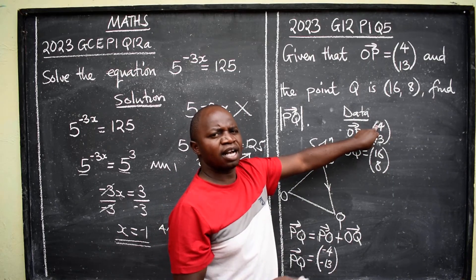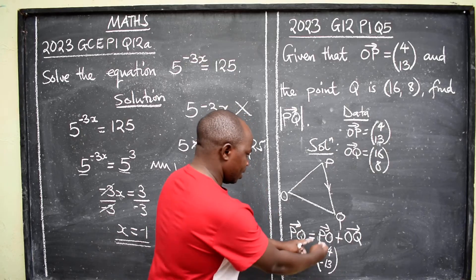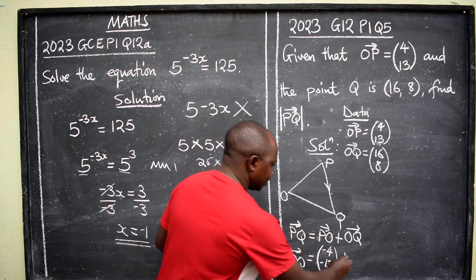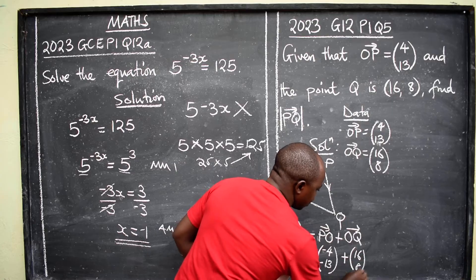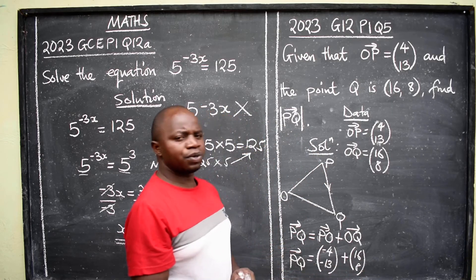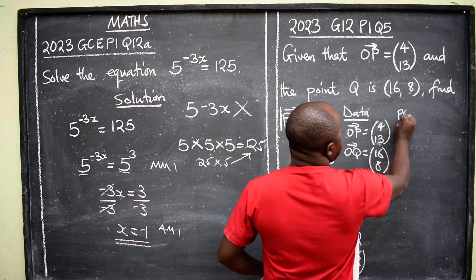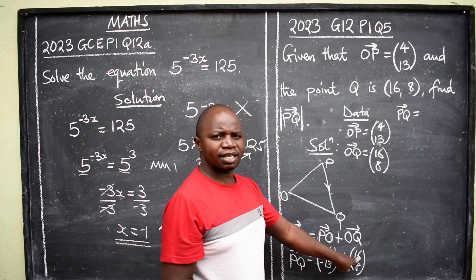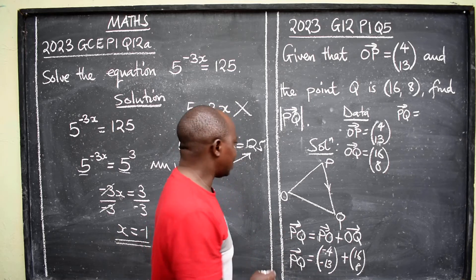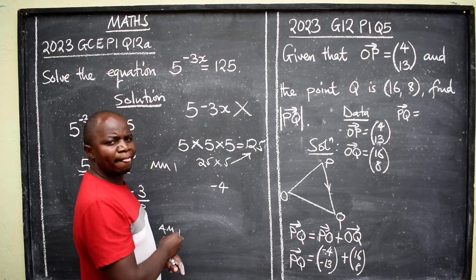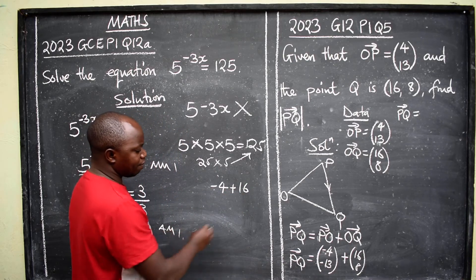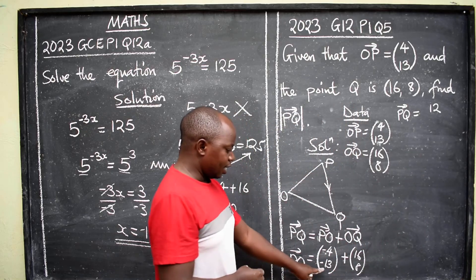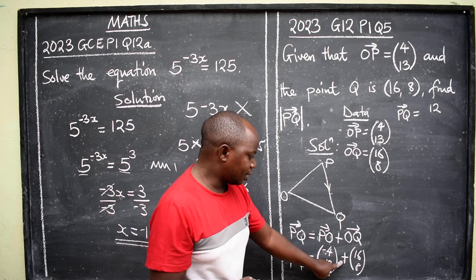If this was negative, opposite could have been positive. Plus OQ, OQ, no change, it's the same 16, 8 like this. Then we are going to find the answer to this. We're going to say PQ will be equal to negative 4 plus 16. What will be the answer? This will give us positive 12. So we have positive 12 here. Negative 13 plus 8.